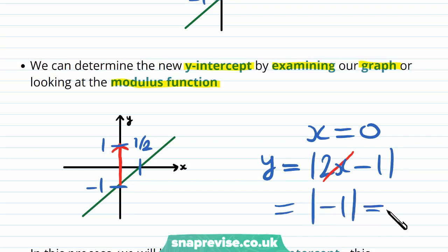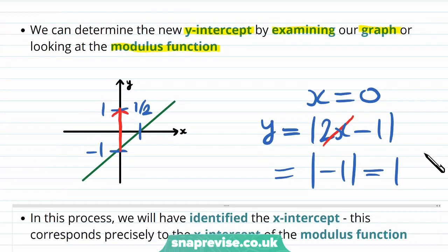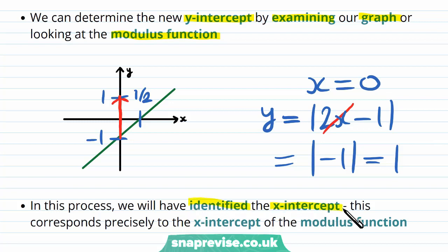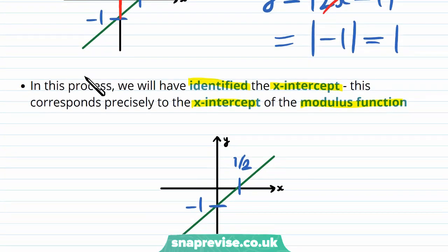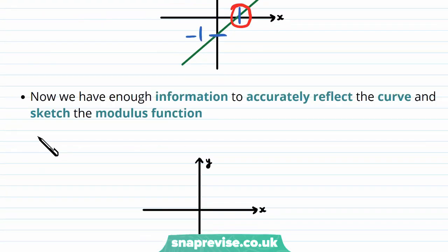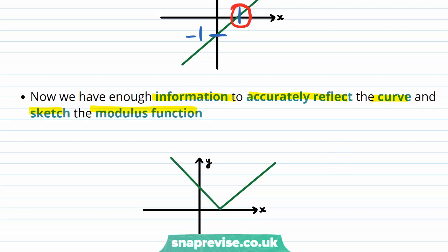The modulus takes the positive value and therefore this is just 1. In this process we will have identified the x-intercept, which corresponds precisely to the x-intercept of the modulus function. The x-intercept of the original function corresponds precisely to the x-intercept of the modulus function — here at one half. Now we have enough information to accurately sketch the modulus function: the positive branch stays, and the previously negative branch gets reflected. The x-intercept is one half and the y-intercept is 1. This is how we sketch linear modulus functions.